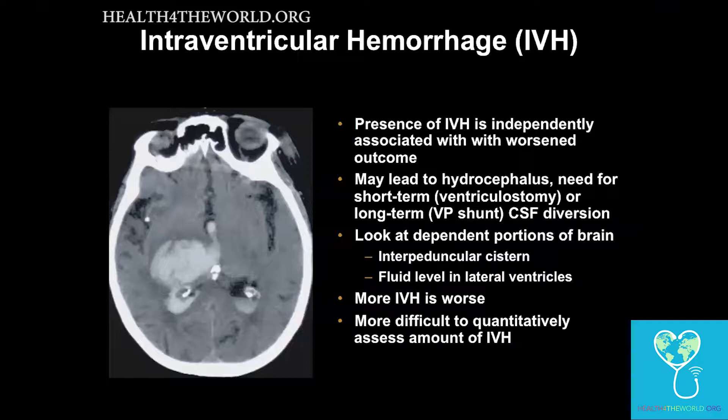Intraventricular hemorrhage is an independent predictor of worsened outcome. It can lead to hydrocephalus and the need for a ventriculostomy or ventriculoperitoneal shunt, and may also injure the brain due to blood toxicity.